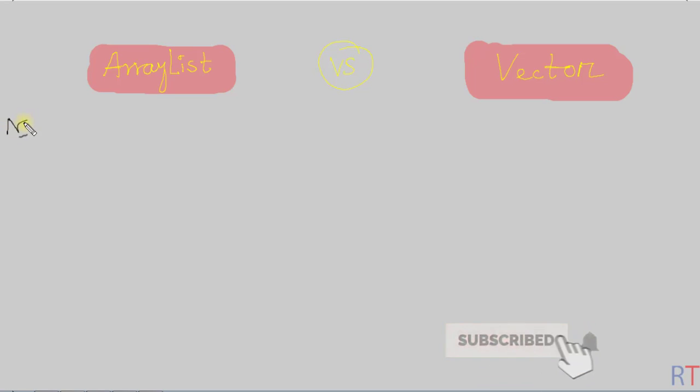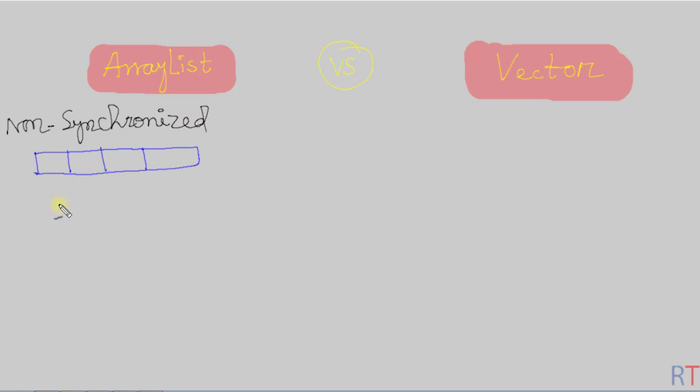Number one: ArrayList is non-synchronized. Non-synchronized means multiple threads like t1, t2 and t3 can all work on the ArrayList at the same time.